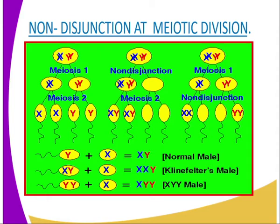Turner syndrome is where an individual lacks one sex chromosome, hence there are only 45 chromosomes. This is the opposite of Klinefelter syndrome. In Turner syndrome, one sex chromosome is missing. If it is a male, they would have either X or Y alone, and in a female, there is only one X chromosome, so the total number of chromosomes equals 45 — one less than the normal 46. Individuals with this syndrome are female and show underdeveloped female characteristics, such as infertility due to lack of ovaries, small uterus, no breast development, and short stature.